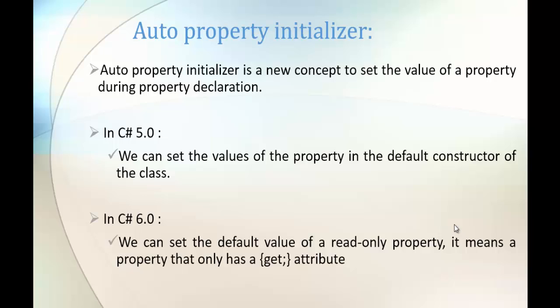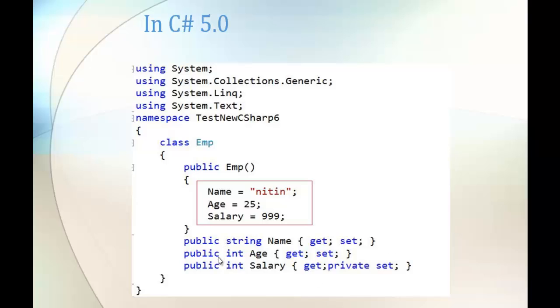In C# version 5, we can set the values of the property in the default constructor of the class. As you can observe in this slide, I have three properties: name, age, and salary. To assign values, I used the default constructor — for example, name is empty, age is 25, salary is 999.